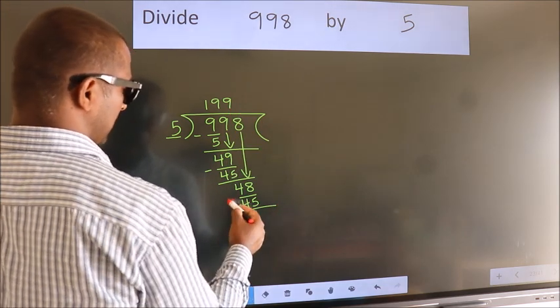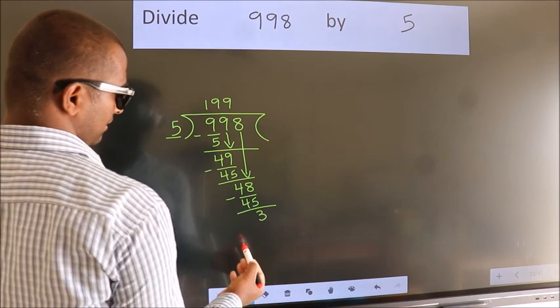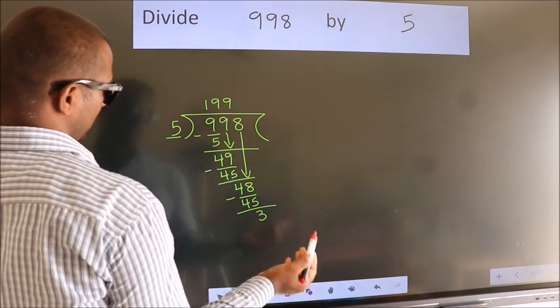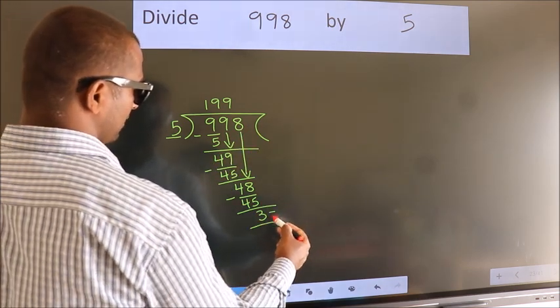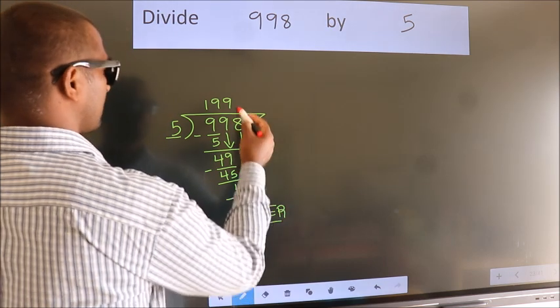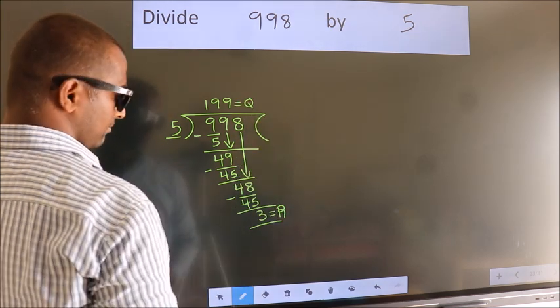Now, we subtract. We get 3. No more numbers to bring it down, so we stop here. This is our remainder. This is our quotient. I'll see you next time.